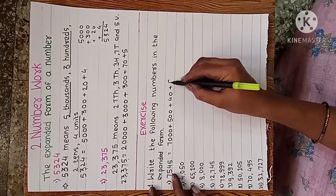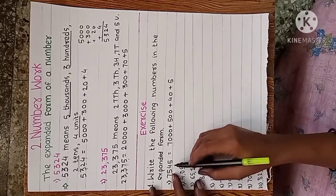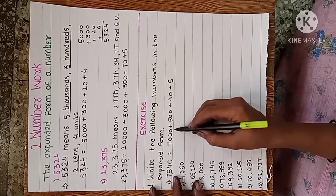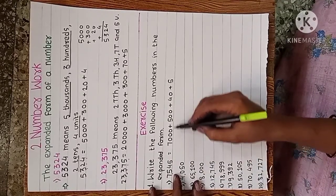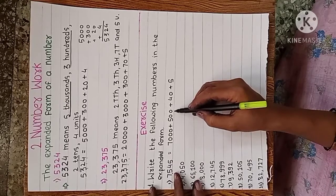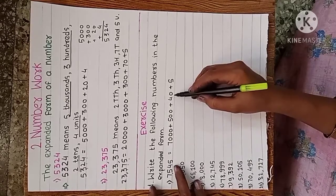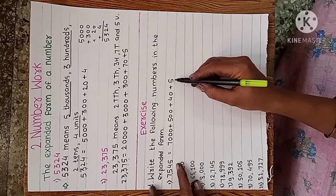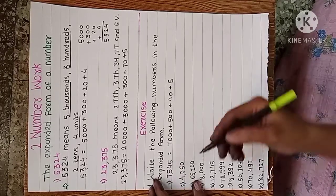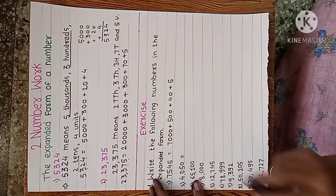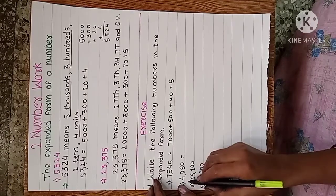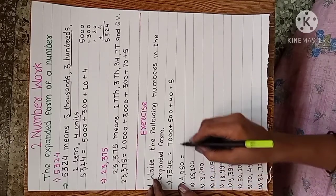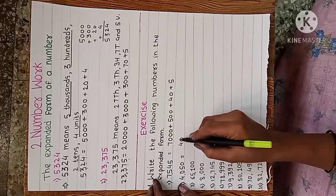Forty five means: seven thousand therefore we write seven thousand, then five hundred — write down five hundred, plus forty — write down forty, five — write down five. We read and write this. The next is four thousand and fifty.